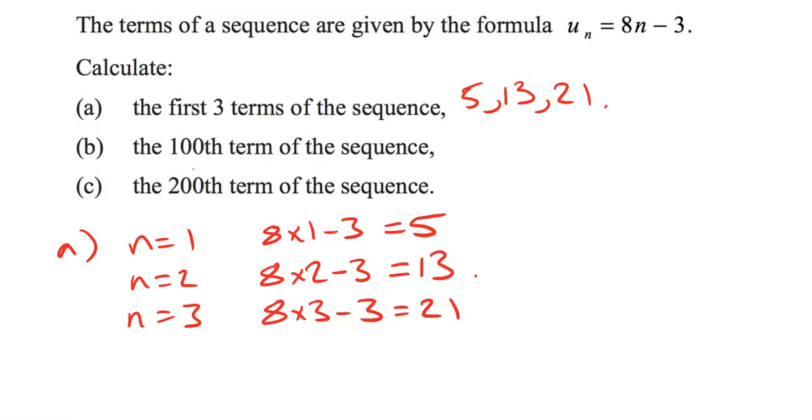So now we're going to find the hundredth term in the list. We have to imagine N is 100. We're finding, let's write that down, U_100. It's going to be 8 times 100 this time, minus 3. Our hundredth number in the list is going to be 797. 8 times 100 is 800, minus 3 is 797.